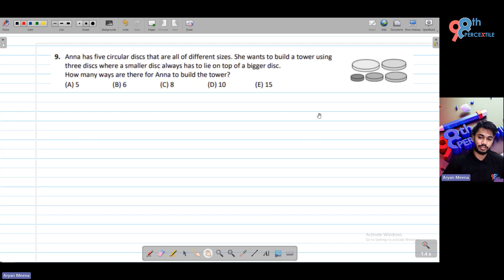We have to find the number of ways she can build a tower. Let's write the numbers of the disks: 1, 2, 3, 4, 5. The bigger number means the bigger disk.